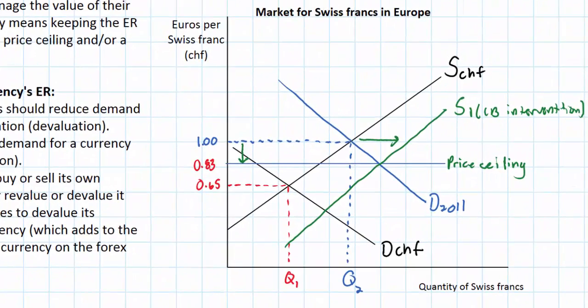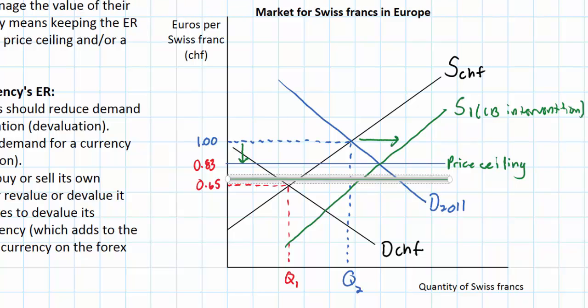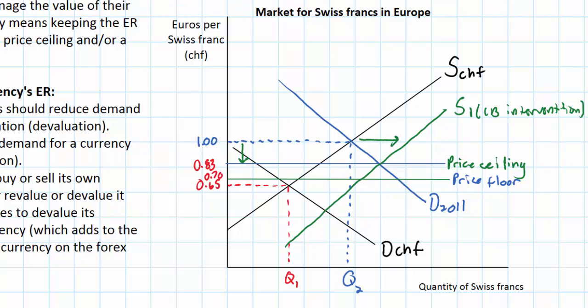Let's say that the Swiss National Bank decided that 70 cents was the lowest exchange rate it desired for the Swiss franc. So I'm going to put a horizontal line here at 70 cents and I'll call this line the price floor. Now if there was a decrease in demand for francs causing the equilibrium exchange rate to fall below 70 cents, we can show that by shifting the demand curve to the left so that it intersects the S1 curve below 70 cents.